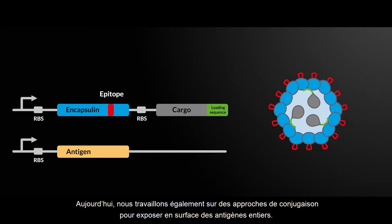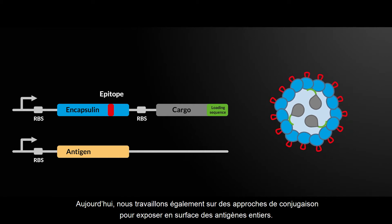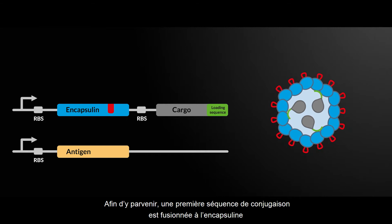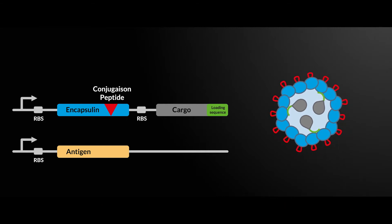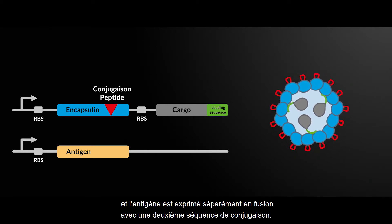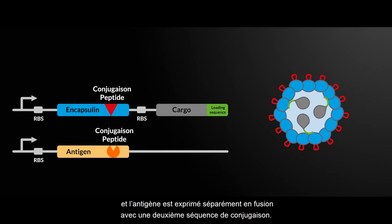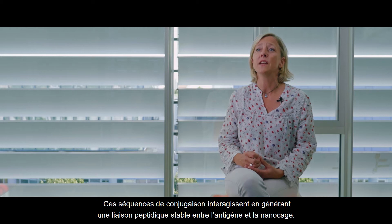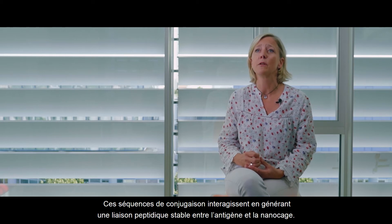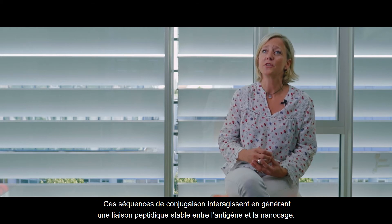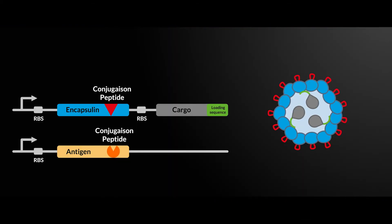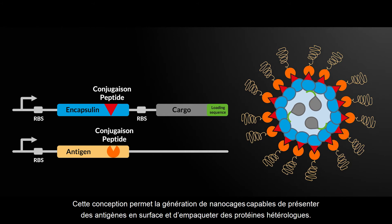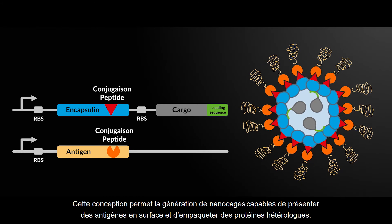Today, we are also working on conjugation approaches to enable surface display of entire antigens. To do this, a conjugation peptide is fused to Encapsulin and the antigen is expressed separately in fusion with a second conjugation sequence. These conjugation sequences interact by generating a stable peptide bond between the antigen and the nanocarrier. This design allows the generation of nanocages with antigen surface presentation and packaged cargo proteins.